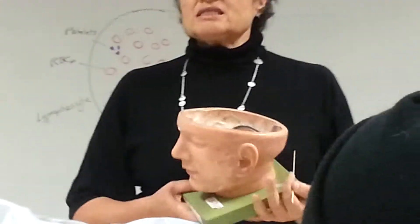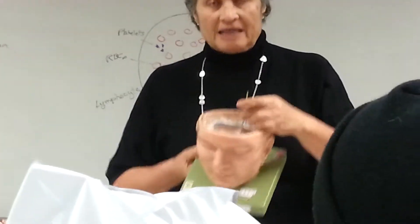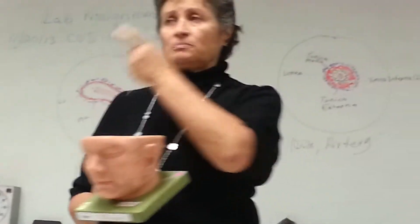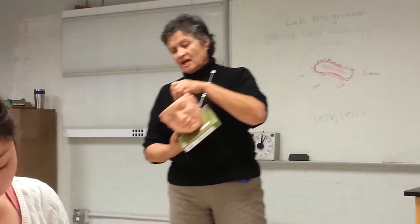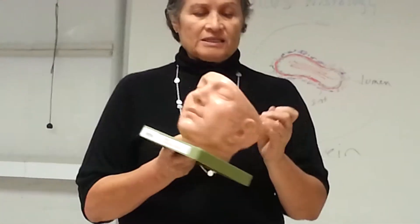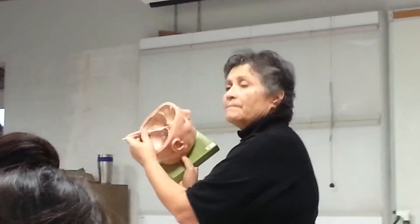Now let's look at the rest of the sinuses. You can see the straight sinus, because it's going straight down. The transverse sinus is in the transverse plane. The sigmoid sinus kind of looks like an S, so you can see it below the transverse sinus. And then the cavernous sinus is where the pituitary gland sits — it's the blue area.